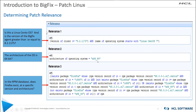Determining patch relevance works the same on all operating systems — all relevant statements must be true before you can execute the action. In this example, relevant statement one checks that the BigFix client version is greater than 8.2 and that the operating system starts with Linux CentOS 7. That's true, so we go to the next statement, which checks for a 64-bit operating system — also true.